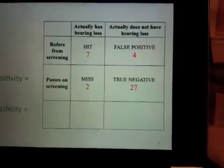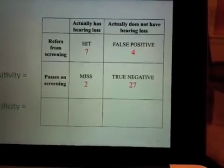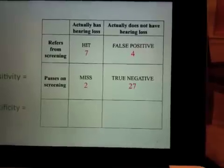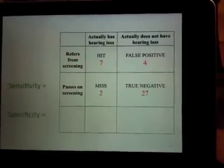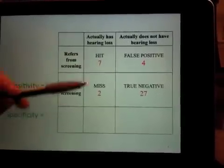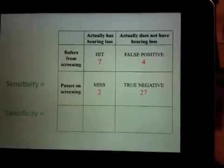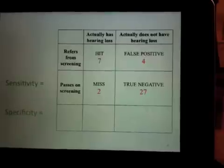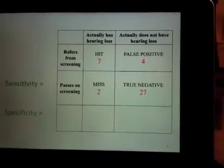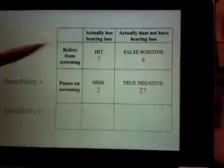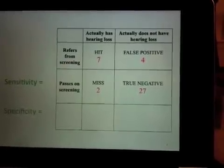To put this into practice: for sensitivity, we take the number of true positives, which is 7, over the sum total of all people who have a hearing loss — that's 7 divided by 7 plus 2, or 9. So the sensitivity of this measure would be 78%.